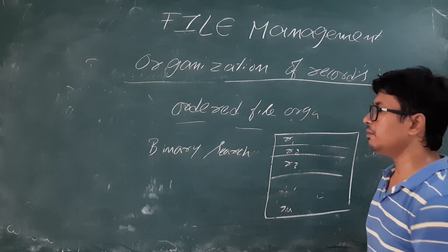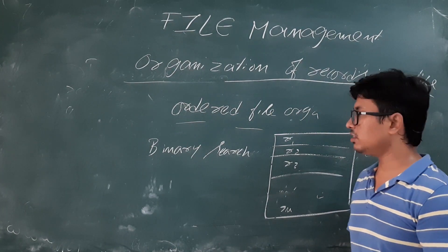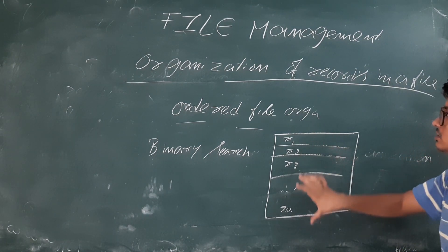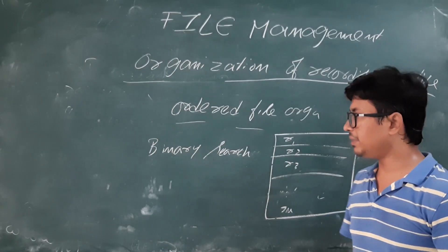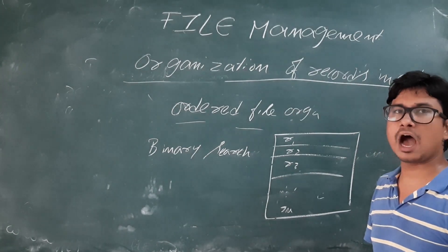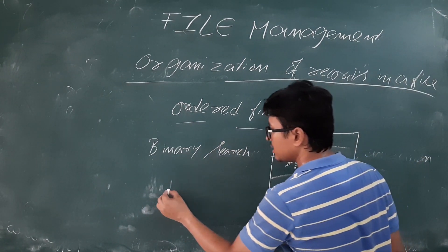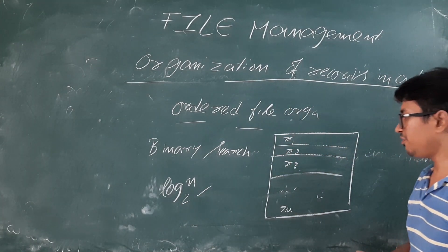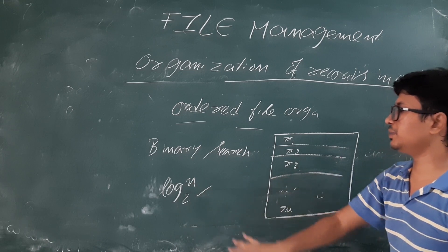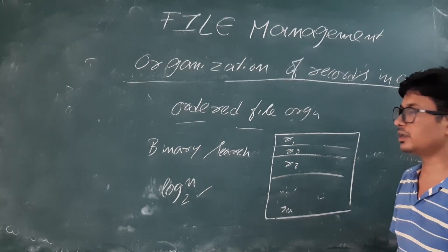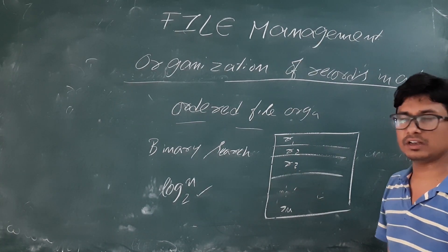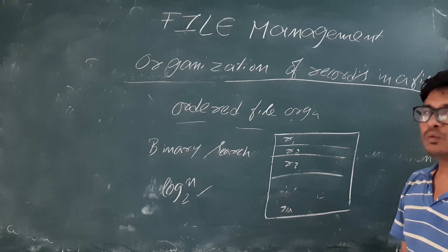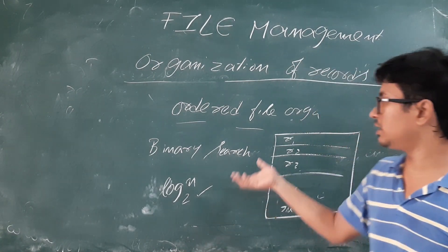I think everyone knows what binary search is and how it works. If all the records are stored in sorted order, we can apply binary search. The average time complexity of binary search is O(log N base 2). So if I want to access any record in an ordered file, the average time complexity is log N base 2.